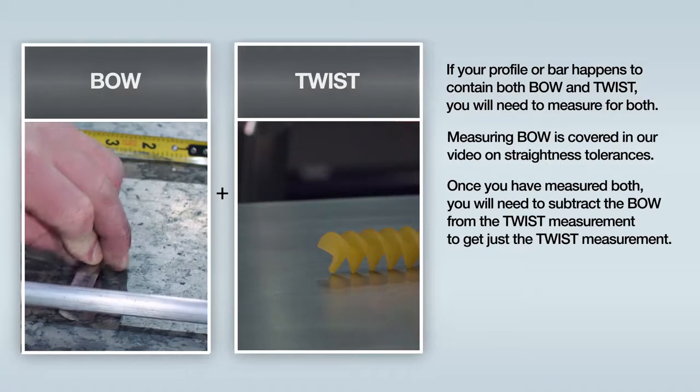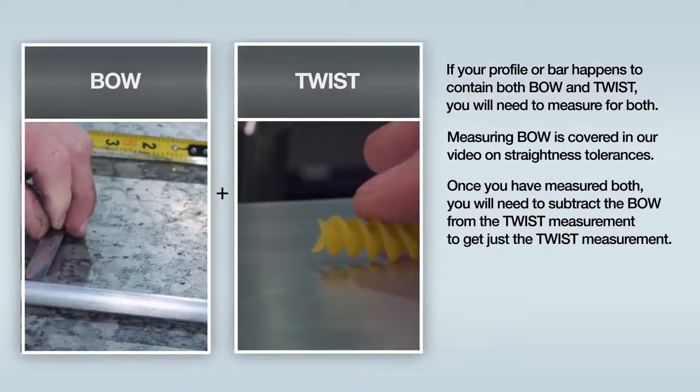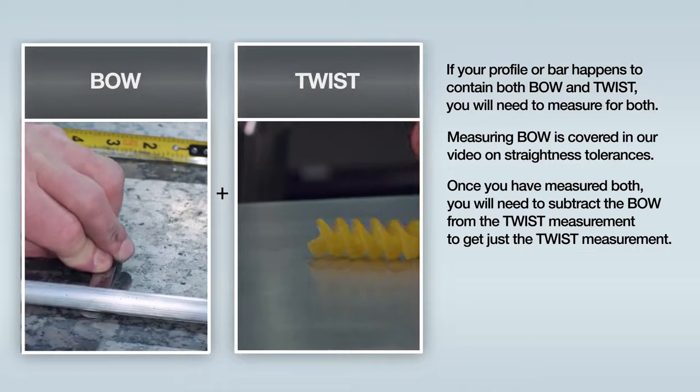Once you have measured both, you will need to subtract the bow from the twist measurement to get just the twist measurement. This is covered in footnote six.